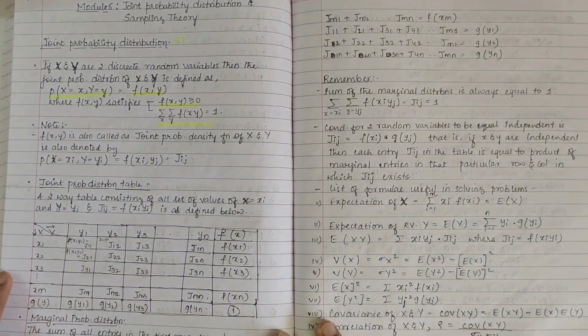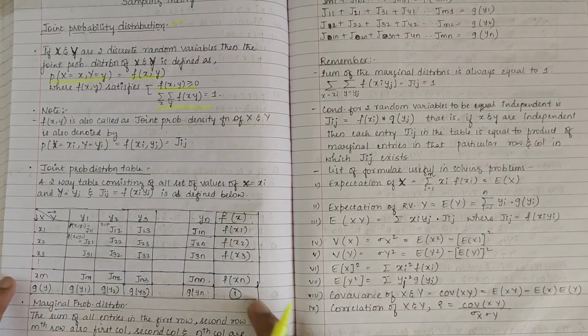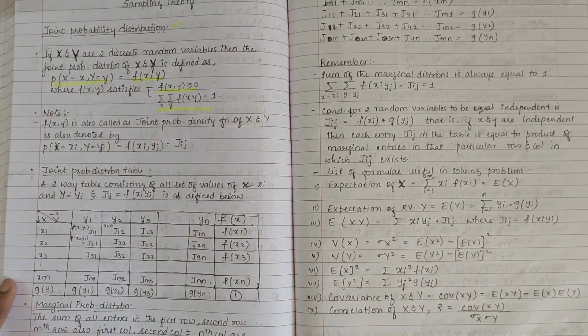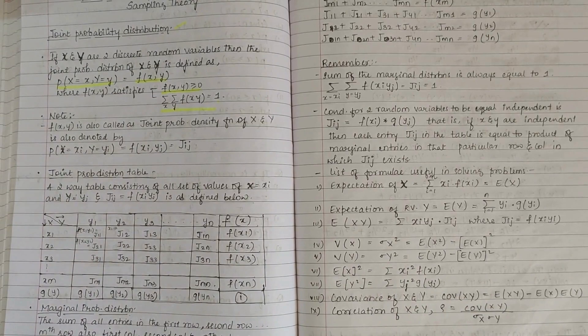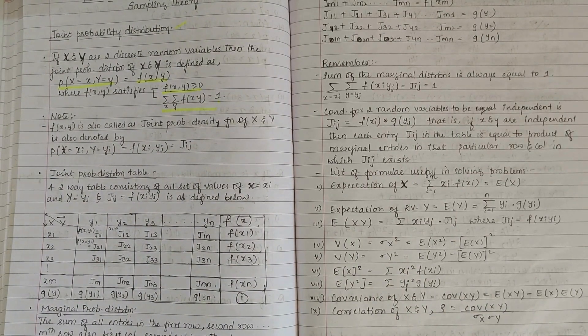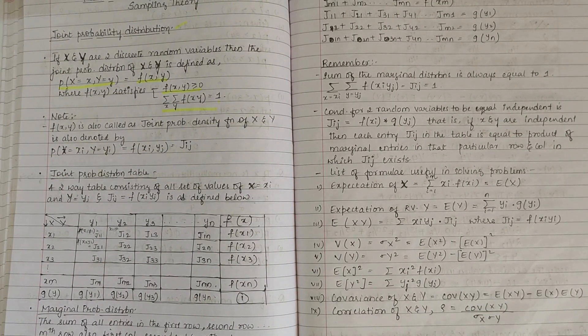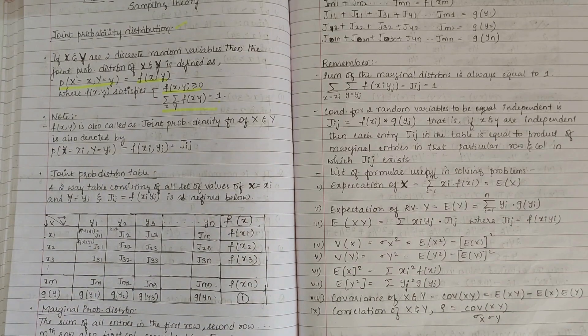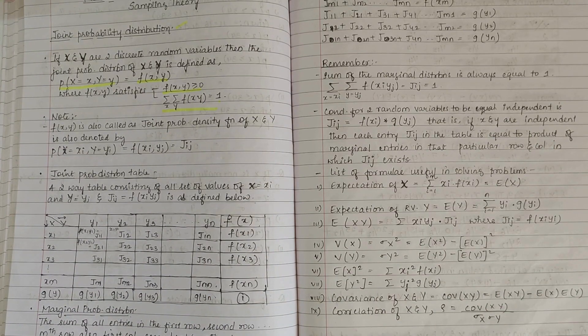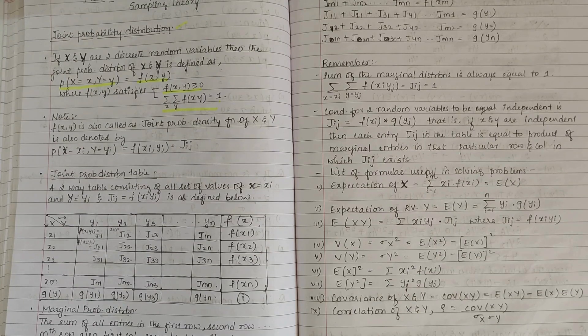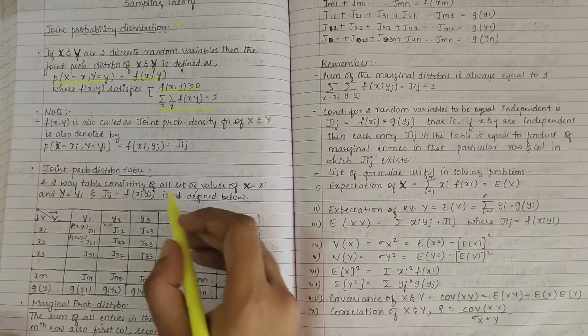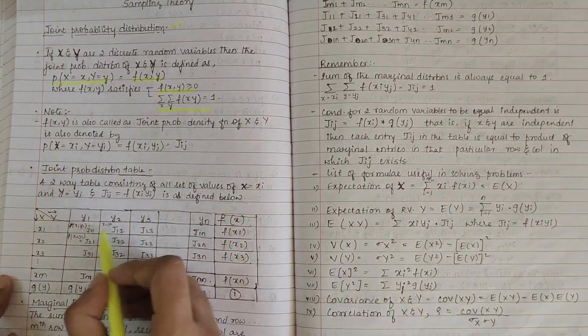So moving on to the next topic, we have joint probability distribution table. In order to represent the X and Y discrete random variables, we make use of a table. This table is a two-way table containing all set of values of X and Y and f(Xi, Yi).